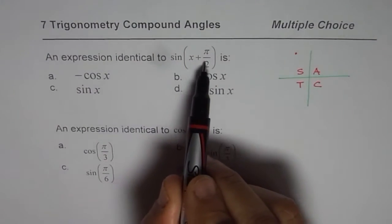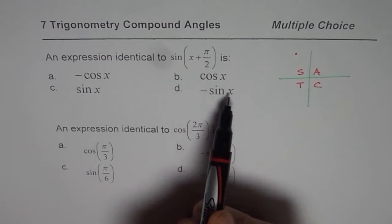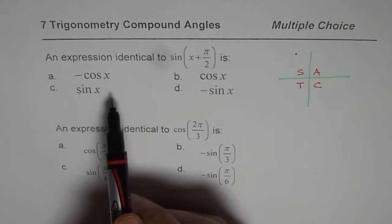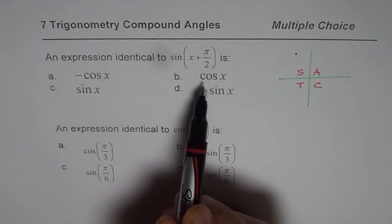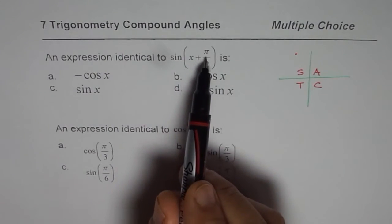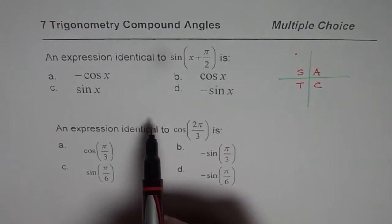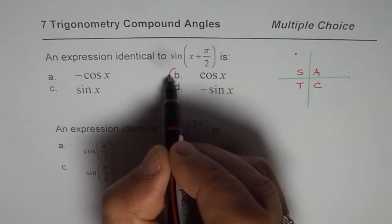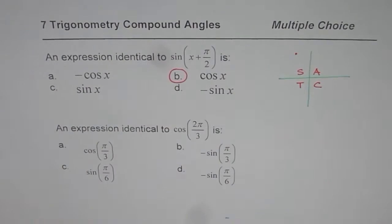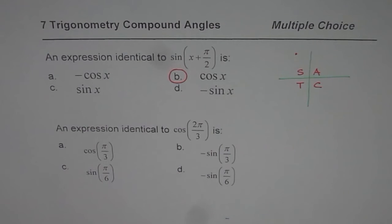Since sine is positive, when we are writing in terms of the acute angle x, it has to be a positive value. Now since it is x + π/2, that positive value should be cosine, and therefore the answer should be b. And that is the kind of logic which can help you get the right answer very fast.